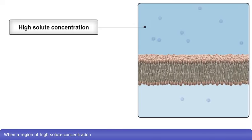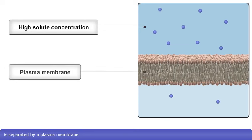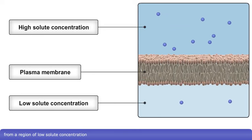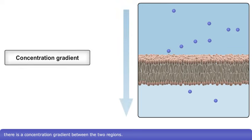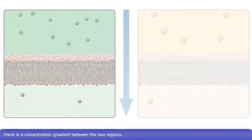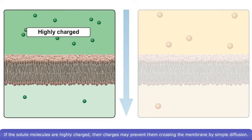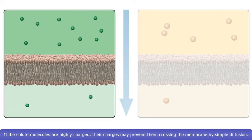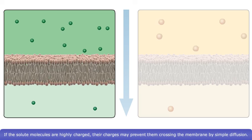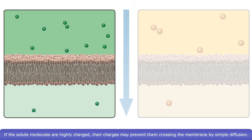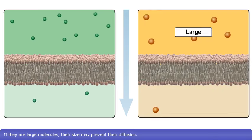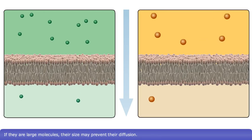When a region of high solute concentration is separated by a plasma membrane from a region of low solute concentration, there is a concentration gradient between the two regions. If the solute molecules are highly charged, their charges may prevent them crossing the membrane by simple diffusion. If they are large molecules, their size may prevent their diffusion.